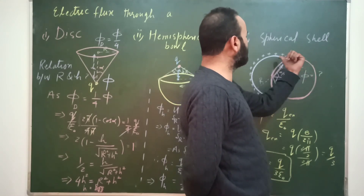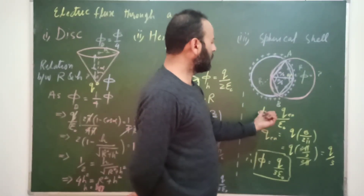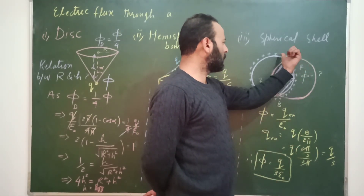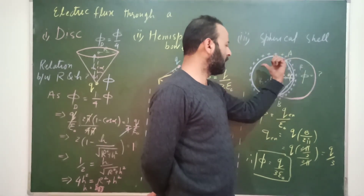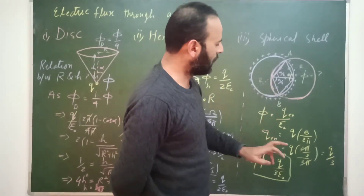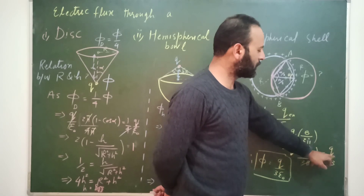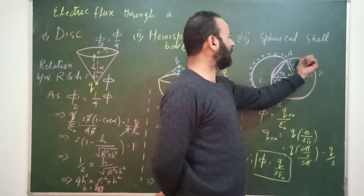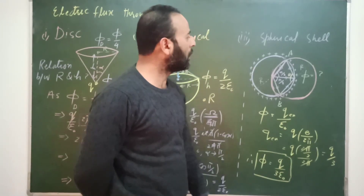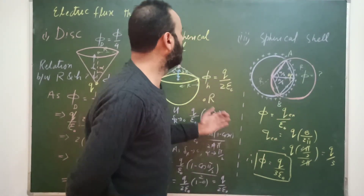Not all of the ring's charge lies inside the spherical shell — only a portion does. The charge enclosed Q_enc equals the total ring charge Q divided by the full angle 2π, multiplied by the angle θ = 2π/3 enclosed within the shell. So Q_enc = Q × (2π/3) / (2π) = Q/3. Therefore, the flux through the spherical shell is φ = Q_enc / ε₀ = Q / (3ε₀).